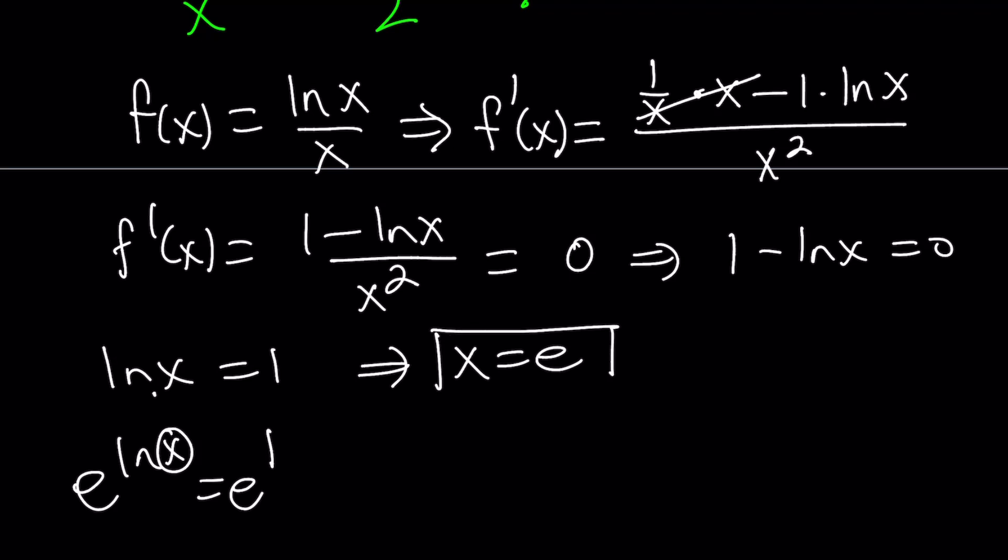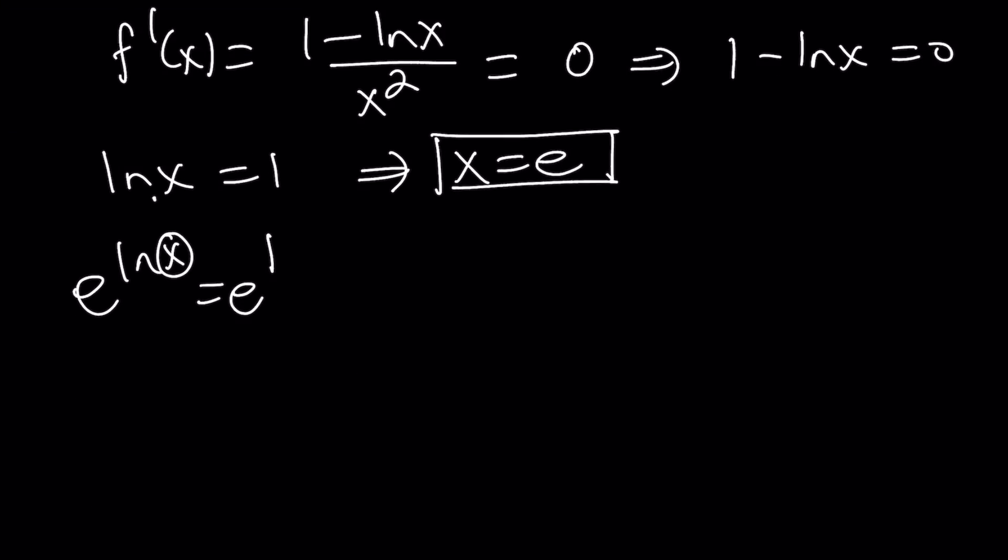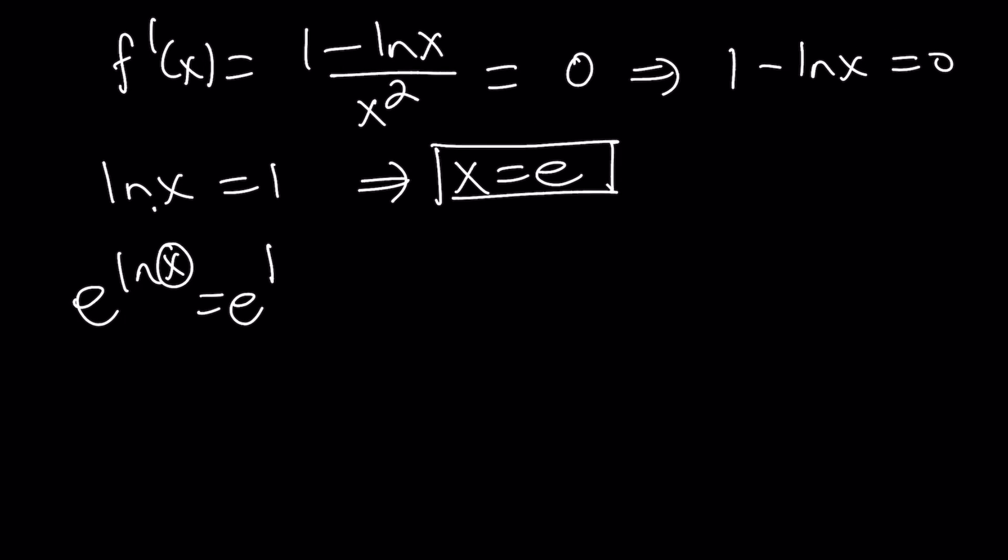All right. So that's our critical value. And that's the only critical value because we only get one solution from setting the derivative equal to 0. So let's go ahead and make a table. I know some folks are going to use the second derivative test, which is perfectly fine. But I like this one better. It's more visual. And also, I don't want to take the second derivative. It's kind of painful sometimes. f prime and f, we're going to mark the critical point here, and that is e.